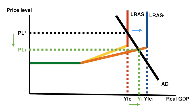We can also replicate these changes by shifting the LRAS rightward from LRAS to LRAS1. You'll notice the result of supply side policies differs from fiscal and monetary policy in that AD doesn't necessarily shift, but the LRAS does. An increase in the LRAS shifts the original curve to LRAS1, resulting in a falling price level and increasing output. The price level is now PL1 and real GDP has risen to Y1.